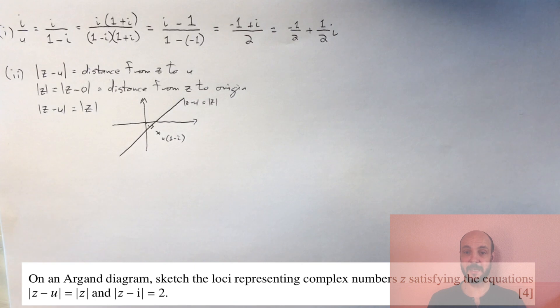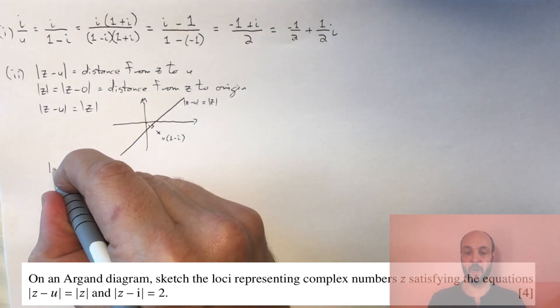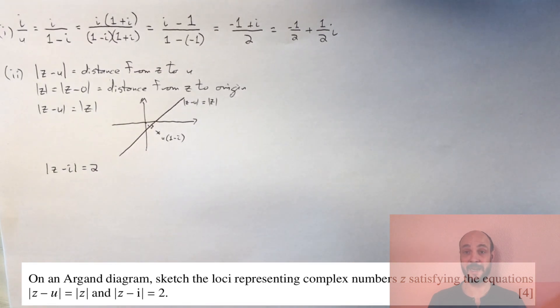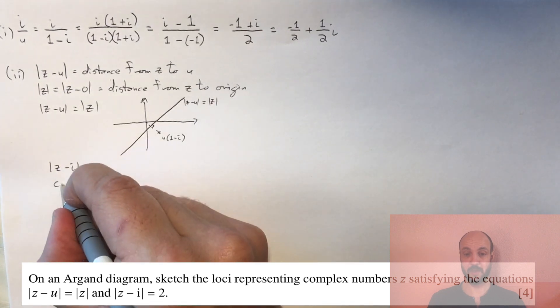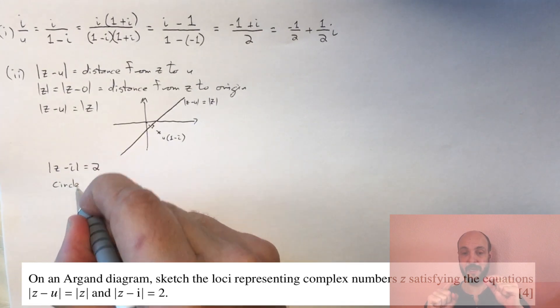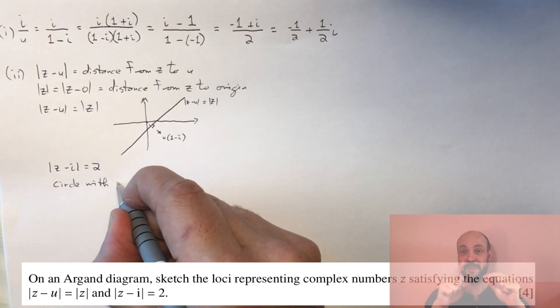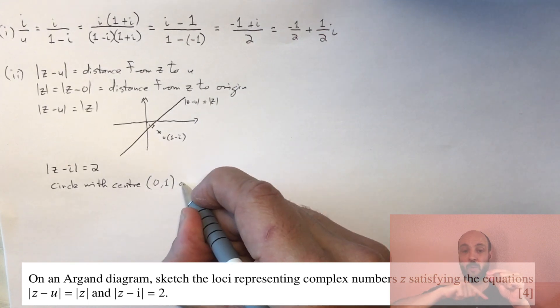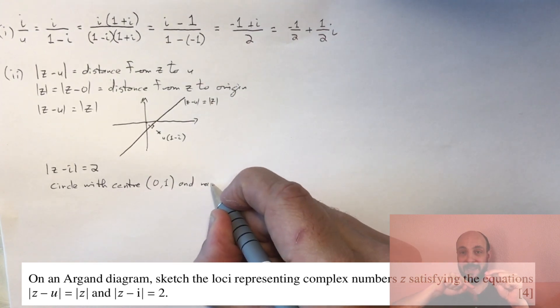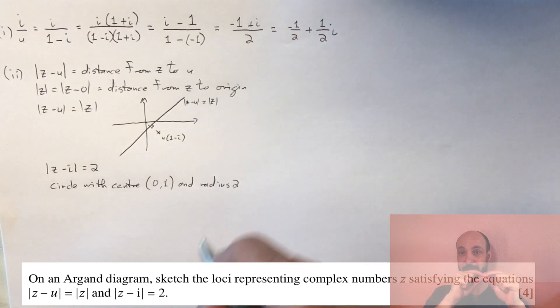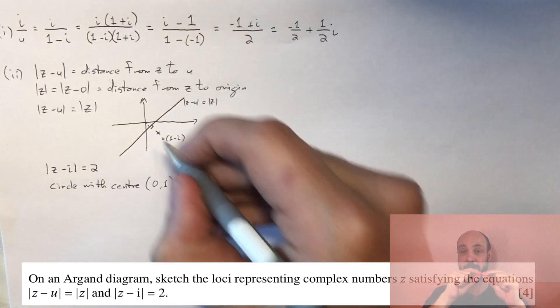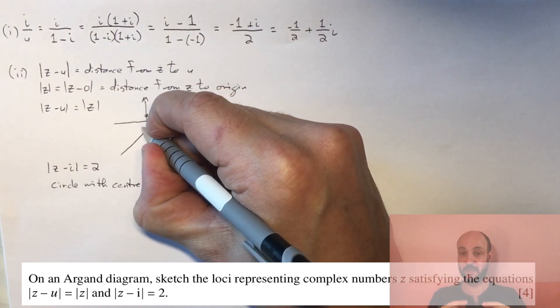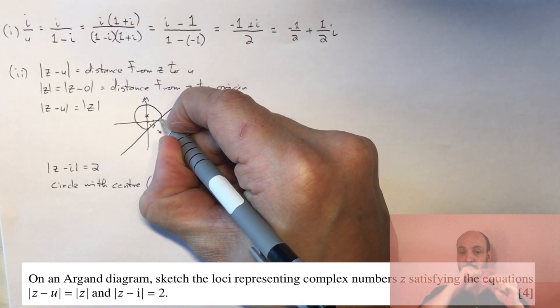Now the second part tells us that |z - i| = 2, which literally means the distance between z and i is always 2. If the distance between a path and a point is always the same, then that path draws out a circle. It's a circle centered on i, or centered on the cartesian coordinates (0,1) with a radius of 2. So on the same graph we need to draw this circle centered on (0,1) with radius 2.